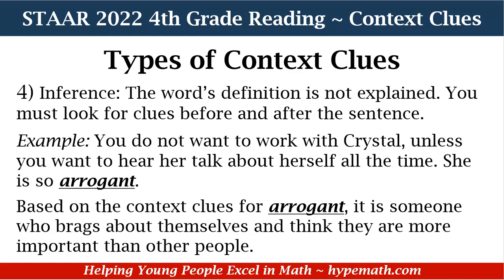Next, we have inference. This is when the word's definition is not explained — you have to look for clues before and after the sentence. Our example is: you do not want to work with Crystal unless you want to hear her talk about herself all the time. She is so arrogant. Based on the context clues for arrogant, it means someone who brags about themselves and thinks they are more important than other people.